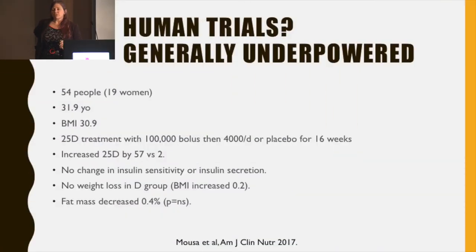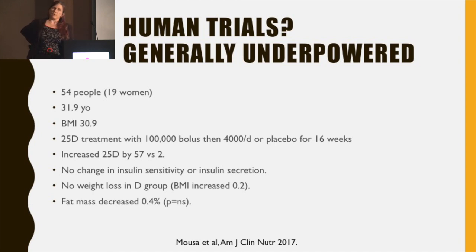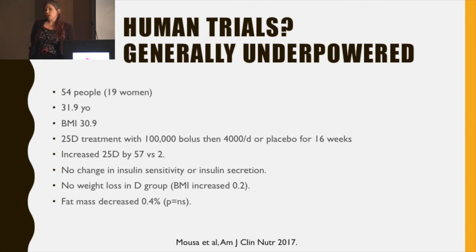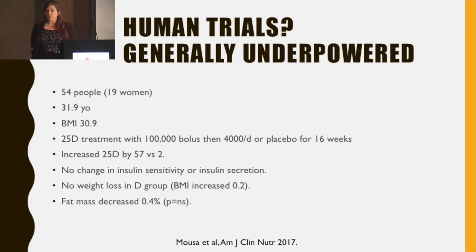Human trials in terms of obesity and effect on weight are disappointing because most either use completely inadequate doses, don't prove they've achieved a change in serum vitamin D, or are just so tiny that they're very underpowered. This example uses only 54 people, fairly young, just into the obese range. They gave 100,000 units of vitamin D at the start and then 4,000 units per day for 16 weeks, or matching high-dose and daily placebos. They increased 25D by 57 versus 2, but there was absolutely no change in insulin sensitivity or insulin secretion, and the fat mass measured by DEXA didn't change significantly — only a 0.4% change.